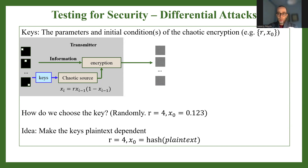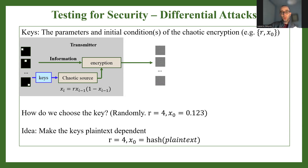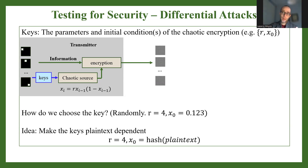There is a potential issue with fixed keys: an attacker may uncover information about how the encryption works without knowing the keys. The solution to resist differential attacks is to make the design plaintext-dependent. This means that prior to encryption, we use the plaintext information to define the keys of the chaotic map. For example, we fix the parameter r equal to 4, but the initial condition x₀ is derived from some sort of hash on the plaintext.